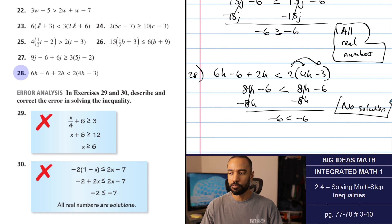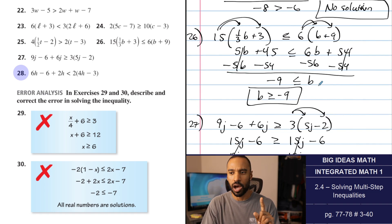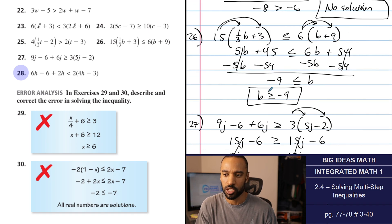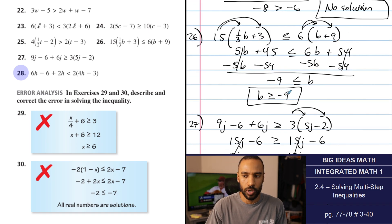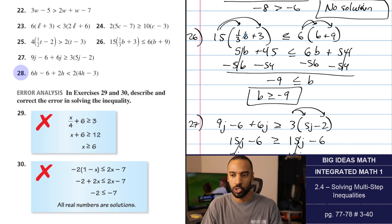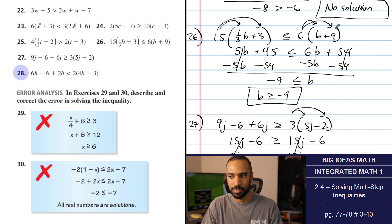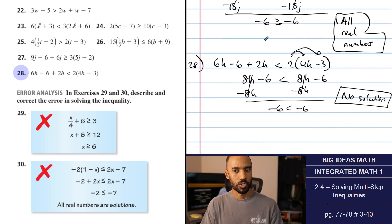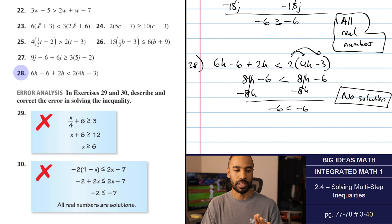Before moving on, I wanted to check number 26 — B is greater than or equal to negative 9. Zero is greater than or equal to negative 9 — true. Plugging in 0: this becomes 0 plus 3, so 15 times 3 is 45. And 0 plus 9, so 6 times 9 is 54. Is 45 less than or equal to 54? Yes — so that should have been true. I expected that, checked it, it worked.